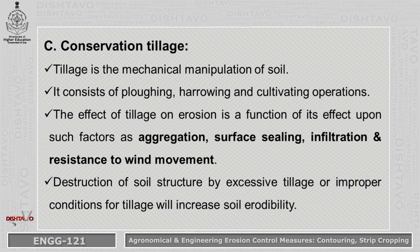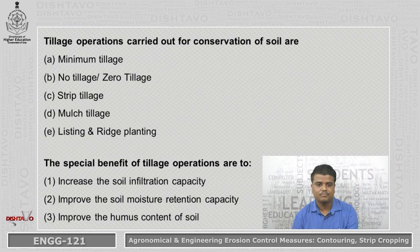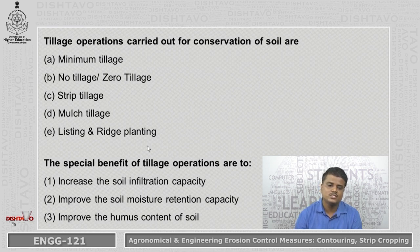Next is Conservation Tillage, which involves mechanical manipulation of the soil with minimal intervention. It consists of plowing, harrowing, and cultivating operations. The effect of tillage on erosion depends on factors like aggregation, surface sealing, infiltration, and resistance to wind movement. Excessive or improper tillage destroys soil structure and increases soil erodibility. Types of conservation tillage include minimum tillage, zero tillage, strip tillage, mulch tillage, and listing and ridge planting.